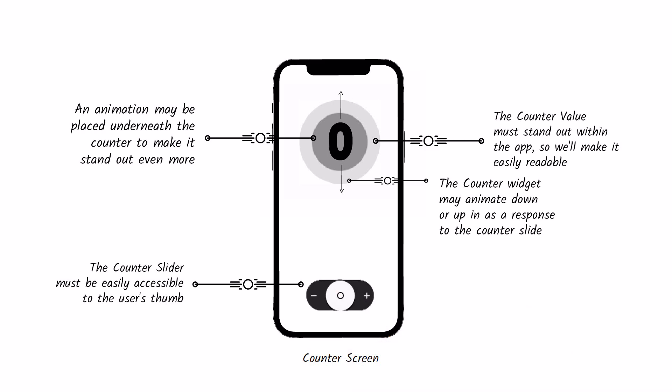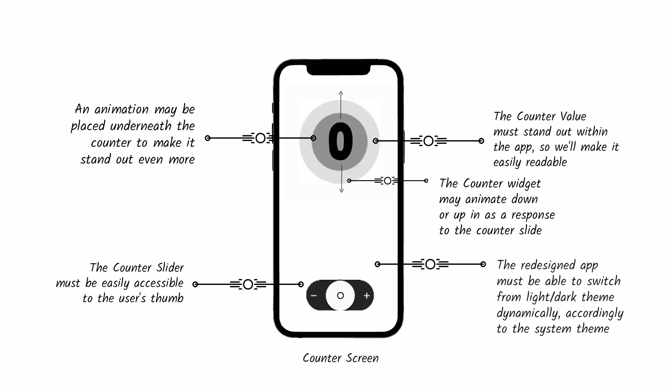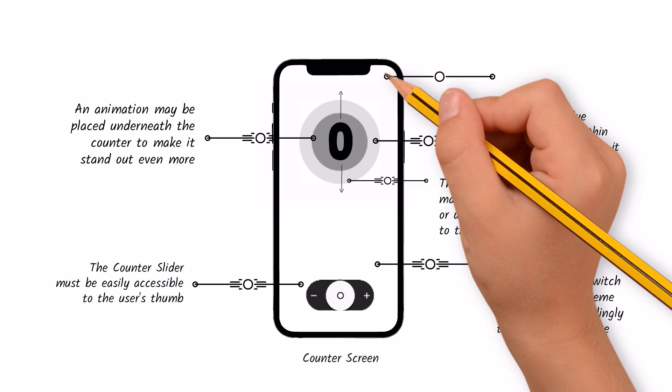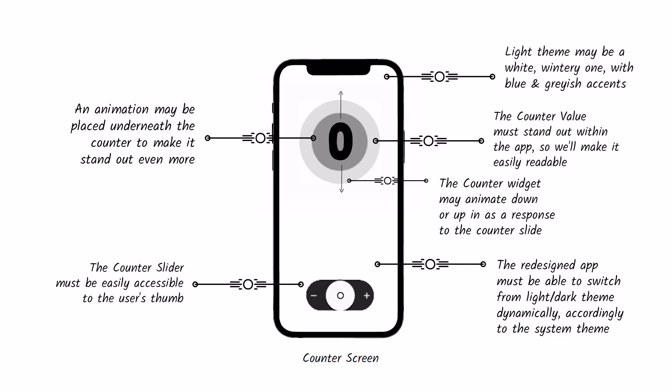Another important feature I really want is for the redesigned counter app to be able to react appropriately whenever the user switches from day to night mode on their phone, so we need to create two separate themes — a light theme and a dark theme. Then we'll need to find a way to link them to the system theme. I would imagine the light theme as a wintery one: bright, predominantly white with subtle bluish and grayish accents.